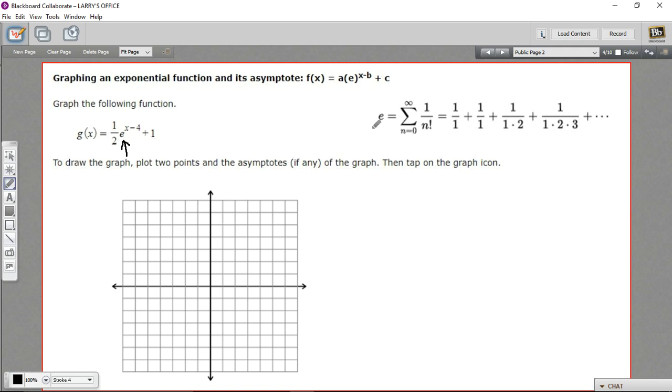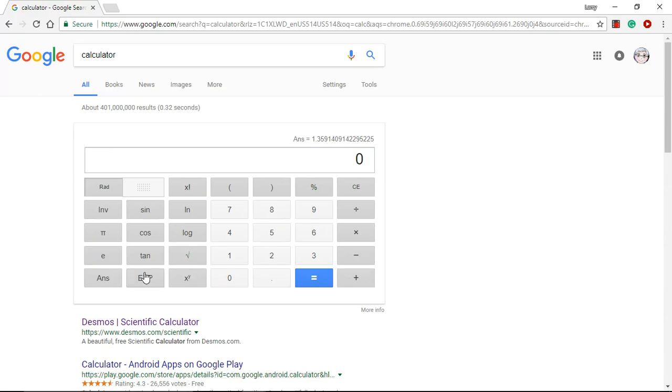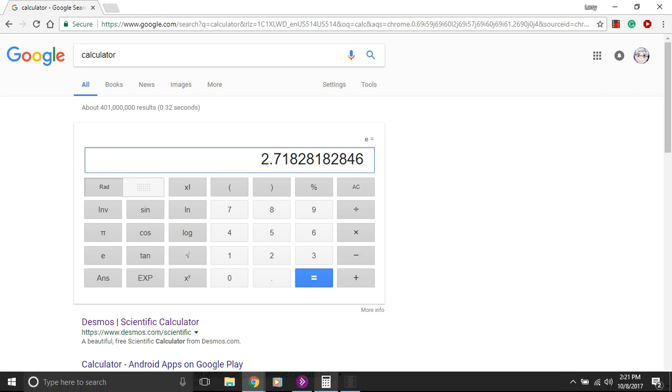In fact, this is a button you'll find on a lot of calculators. There's an e button probably on the calculator you use. If we pop into Google calculator here, there's the e button. I just press that and hit equals, and there's an approximation of the value. So around 2.7, a little bit more than 2.7. That's the value of e.